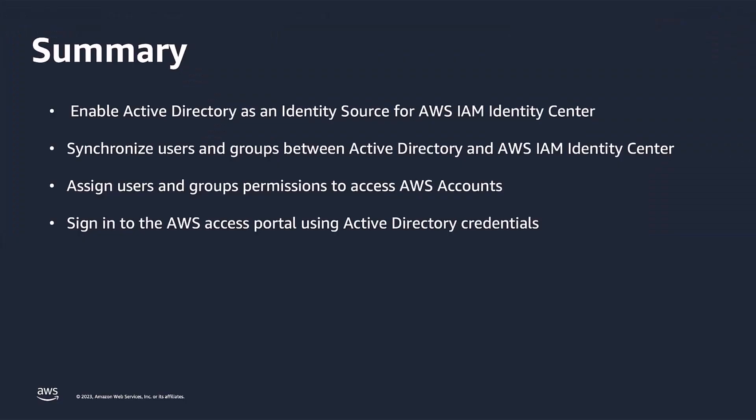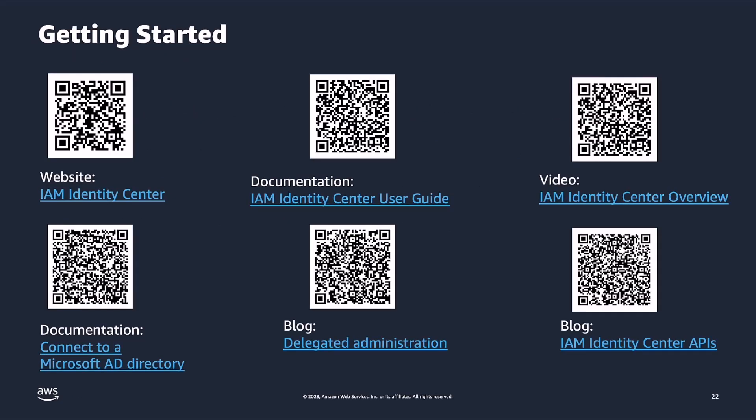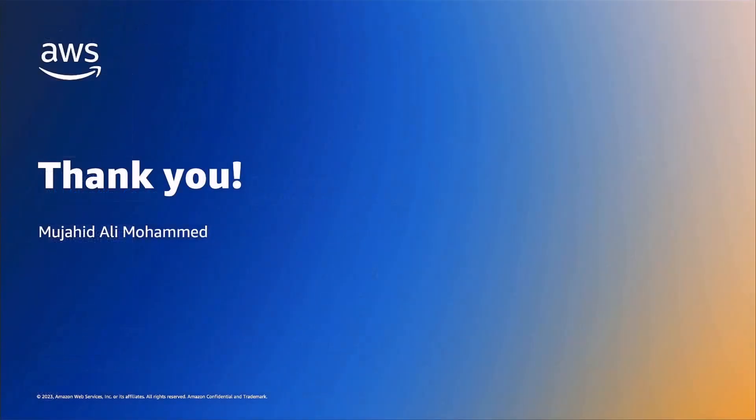Let's summarize what we learned from this demo. First, I enabled Active Directory as an identity source for AWS IAM Identity Center. Next, I synchronized users and groups between Active Directory and AWS IAM Identity Center. Then, I assigned users and groups permissions to access AWS accounts. To complete the demo, I signed in to the AWS Access Portal using Active Directory credentials and was able to successfully log in to the AWS Management Console. Now that you have seen how simple it is to integrate your Active Directory users and groups to AWS IAM Identity Center, here are some more resources for you to get started. Feel free to pause the video at this point and scan the QR code. Thank you.